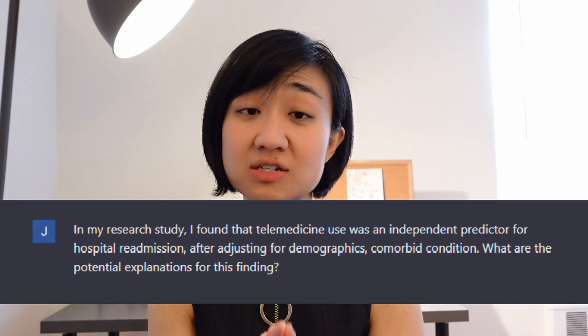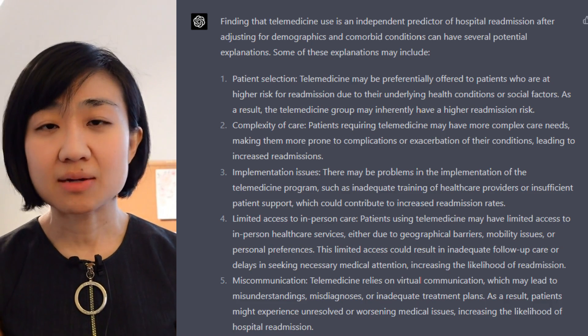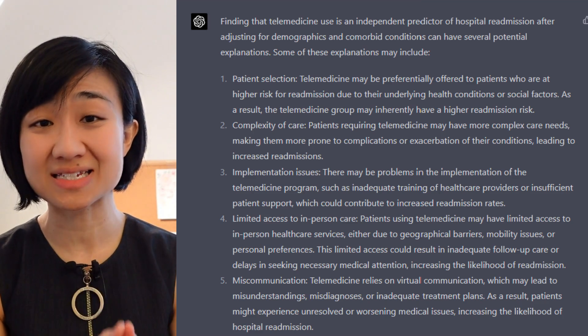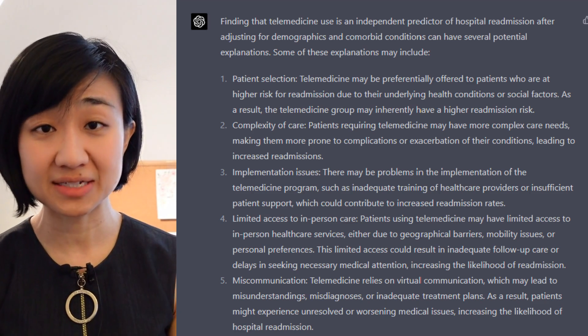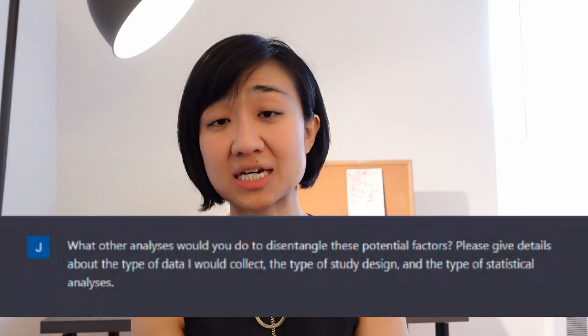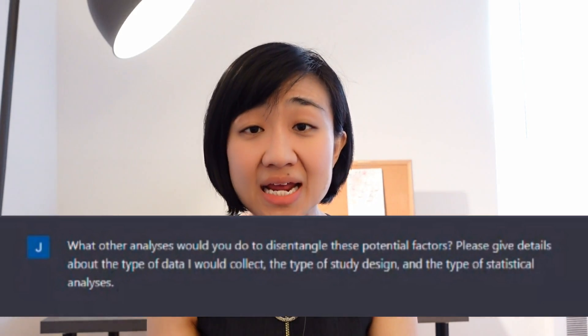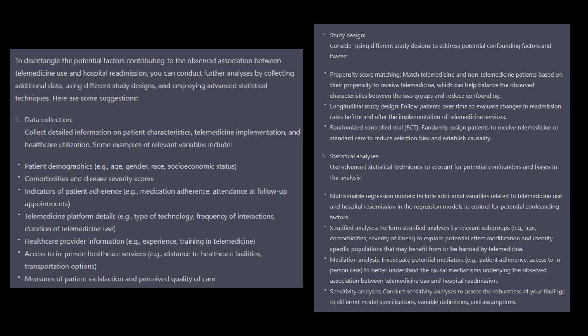The explanations it provided are fair — something you could come up with yourself. But as I was reading through them, I thought it would be great to design my study better to disentangle those factors. So I added another prompt: 'What other analyses would you do to disentangle these potential factors? Please give details about the type of data I would collect, the type of study design, and the type of statistical analyses.' The output is excellent — I am no longer lost. I have the exact steps needed, and this could even be a great start for a research protocol. Don't copy word for word, but use it as a baseline and then add details specific to your project.